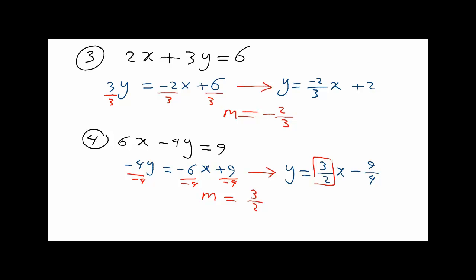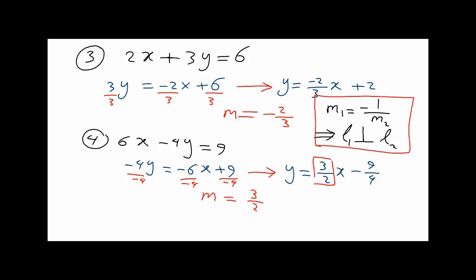Notice the two slopes from examples 3 and 4: they are opposite in sign — one is negative, the other is positive — and one is the reciprocal of the other (-2/3 and 3/2). When M1 equals the negative reciprocal of M2, this tells us that line 1 and line 2 are perpendicular. So if two lines are perpendicular, one slope equals the negative reciprocal of the other.